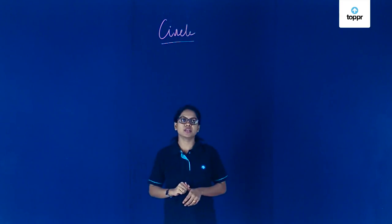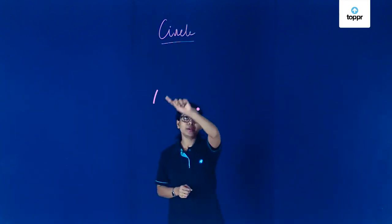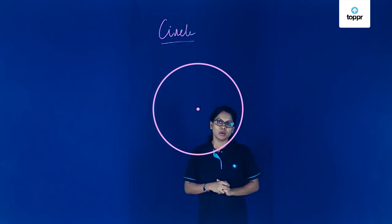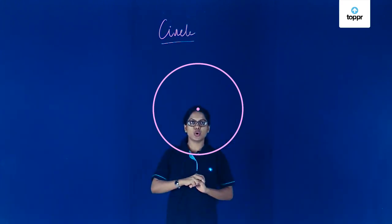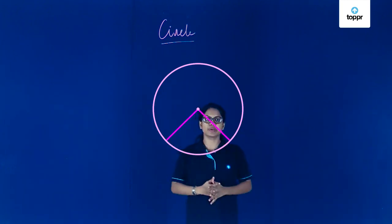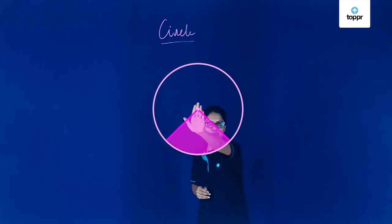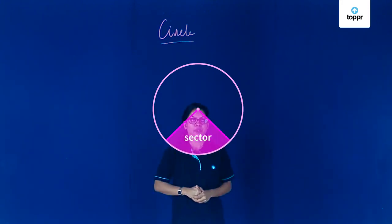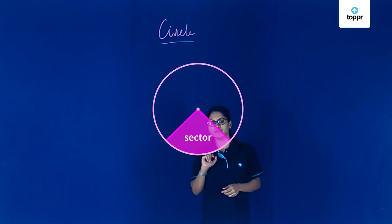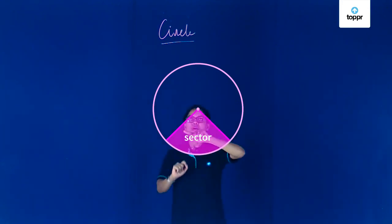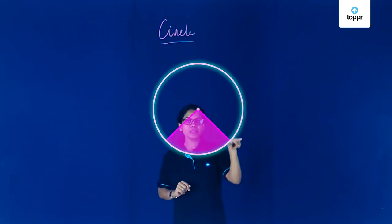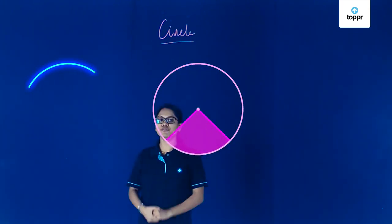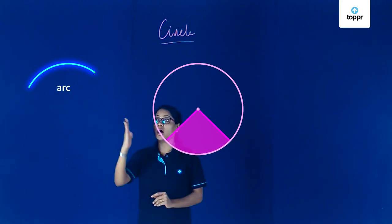Let's draw another circle. Here is the center and here is my circle. Let me draw one radius and another radius. This space that you see between the two radii is nothing but the sector of a circle. And there's another part of a circle that might interest you — can you see the boundary? If I take a part of the boundary, this part of the boundary is nothing but the arc of a circle.